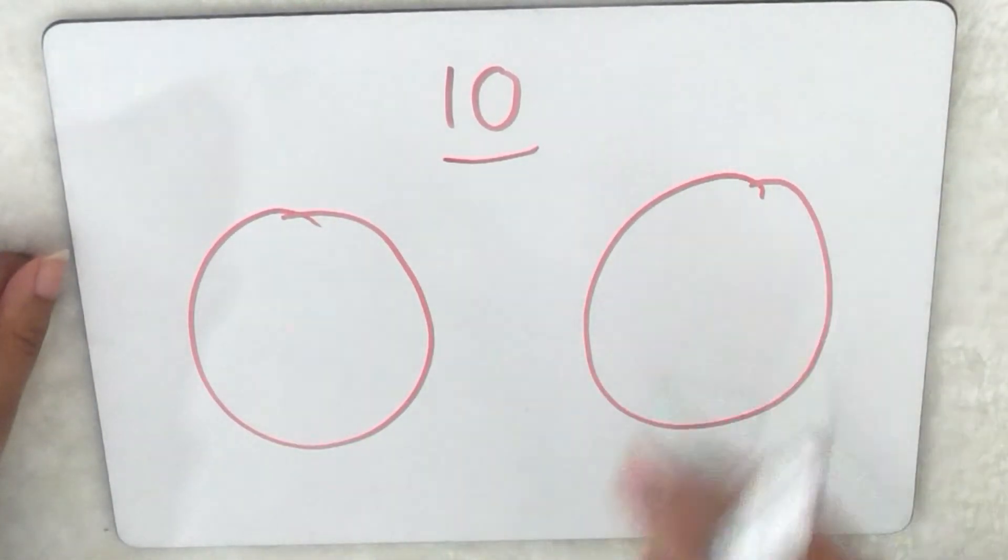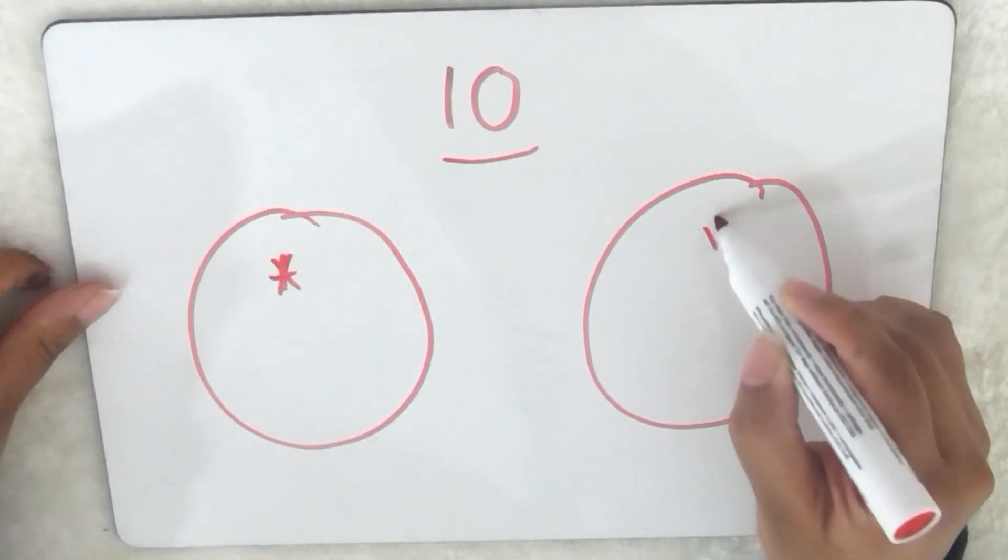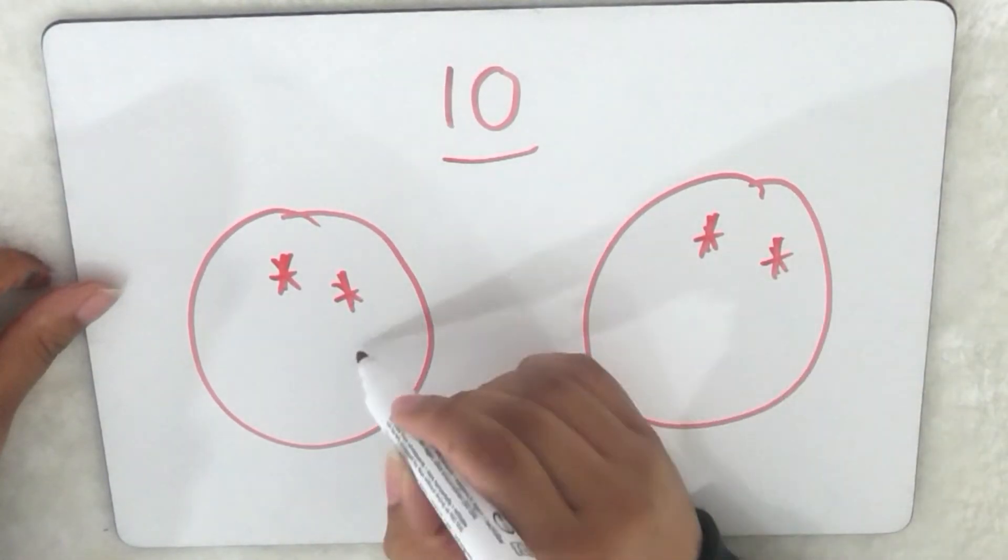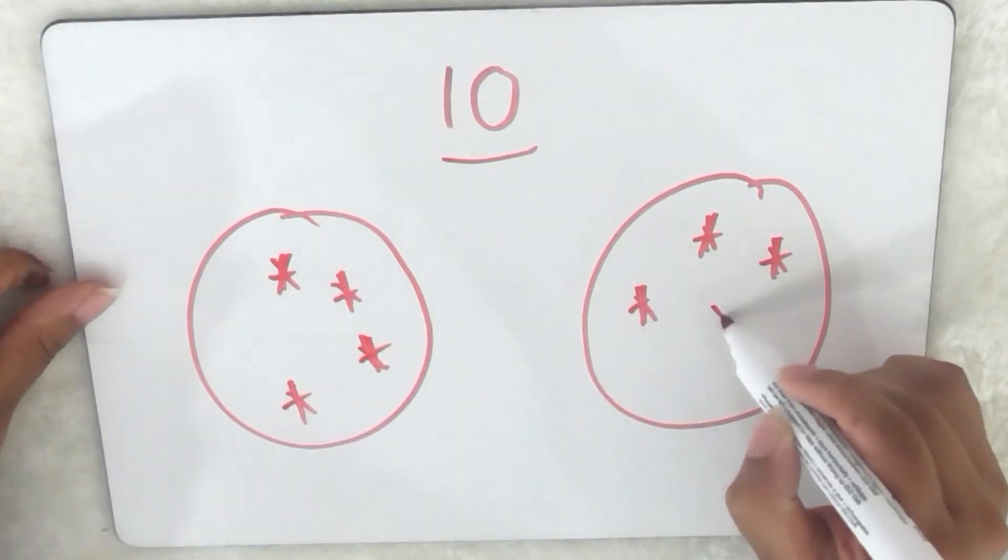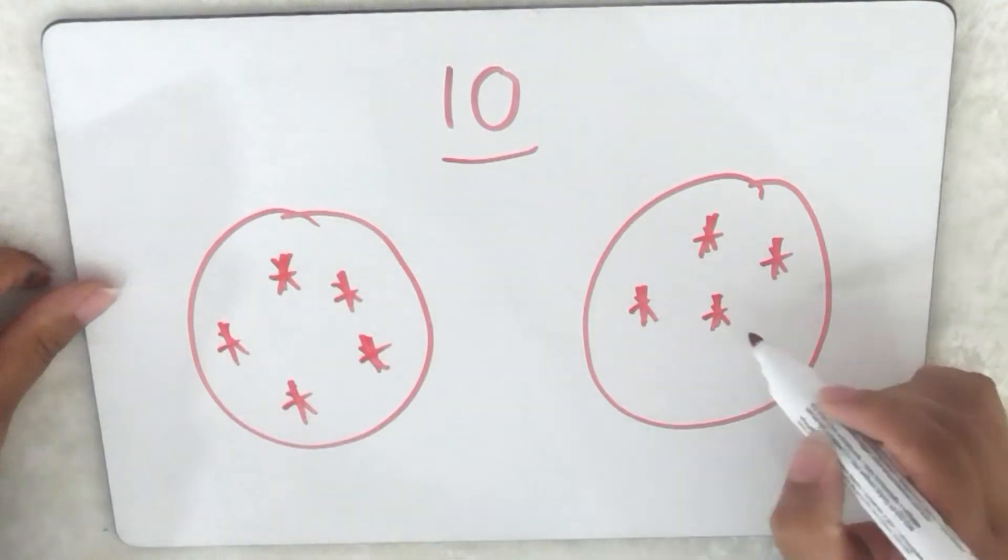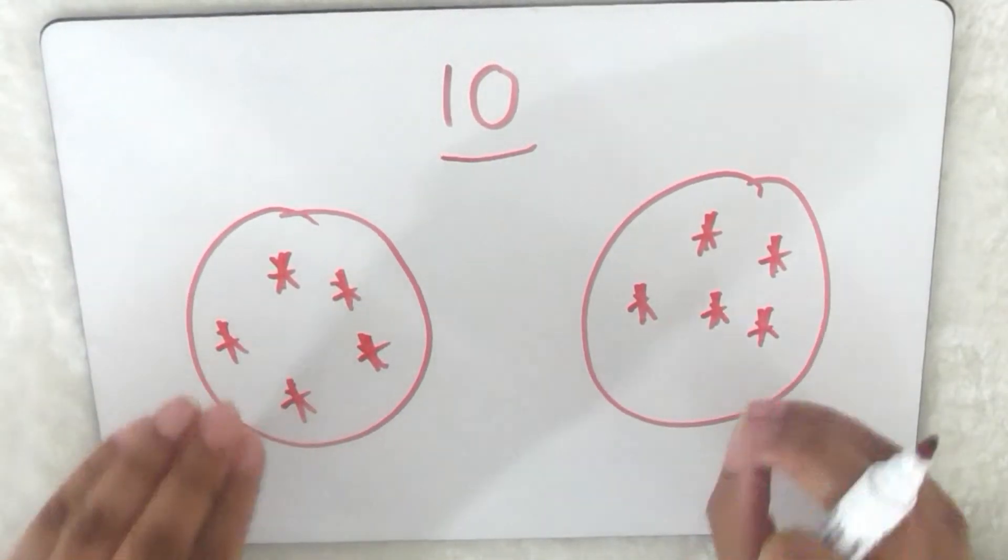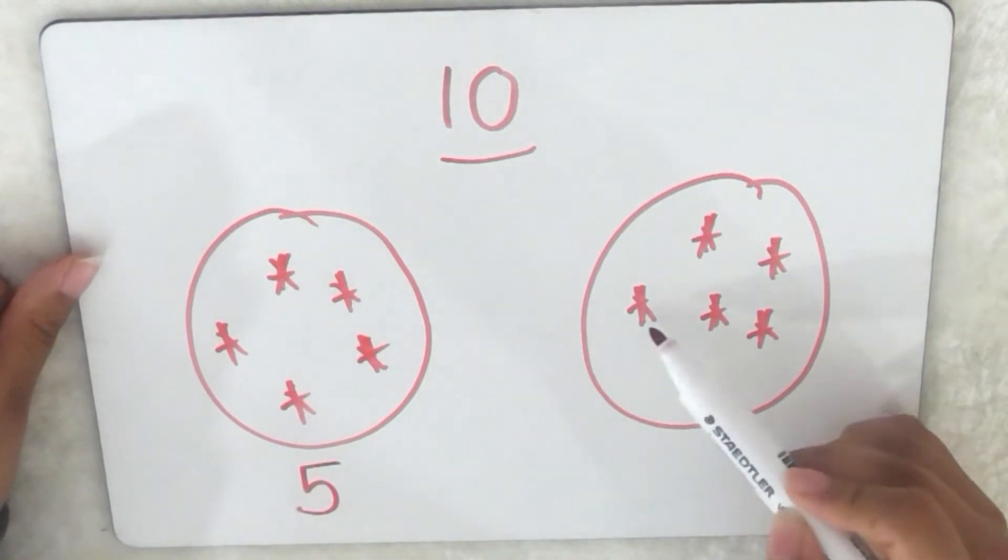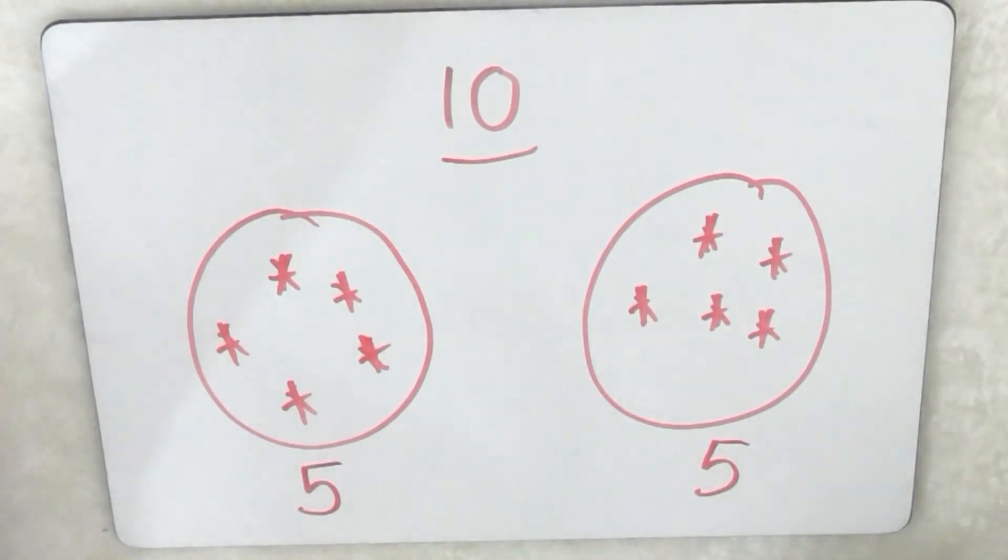So I need to share out 10, so off I go: 1, 2, 3, 4, 5, 6, 7, 8, 9, and 10. And I stop at the number 10 because that's what I was sharing. Now I need to check I have the same amount in both. 1, 2, 3, 4, 5. 1, 2, 3, 4, 5. I do, so I've shared it equally. So that means half of 10 equals 5.